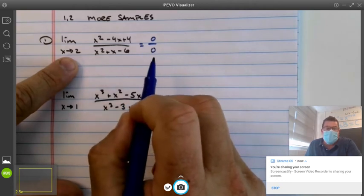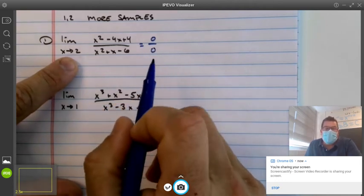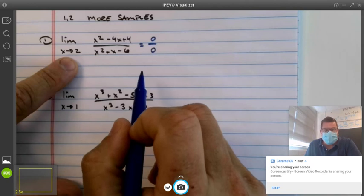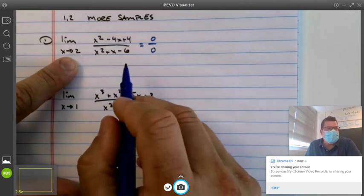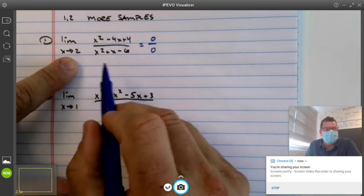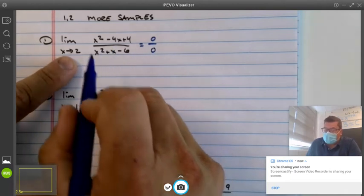When you get this indeterminate form, 0 divided by 0, factor, cancel, and shove it back in. We might have to algebraically manipulate this other than if something's not factorable.